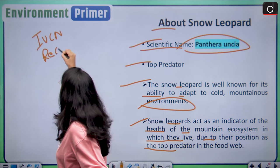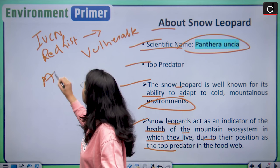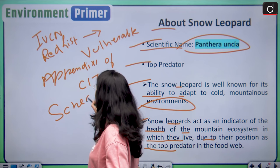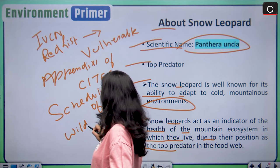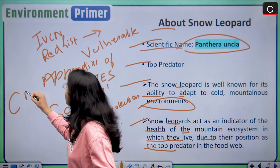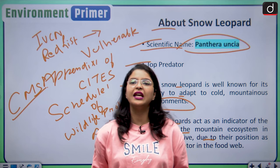Regarding their protection status: in the IUCN Red List, they have been listed as Vulnerable. They are listed under Appendix I of CITES. They are listed under Schedule I of the Wildlife Protection Act. And they are also protected under CMS — the Convention on Migratory Species — as well as various national laws in various range countries.